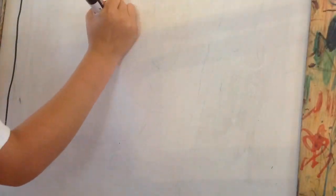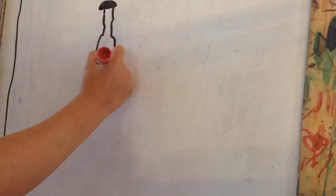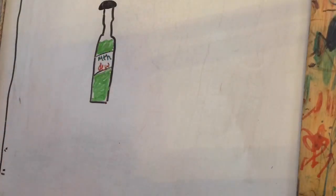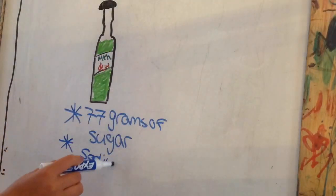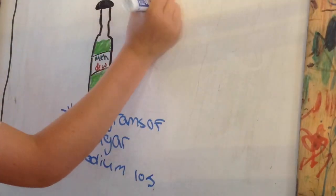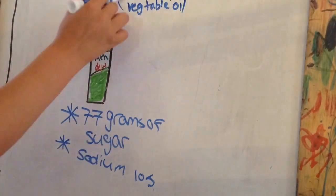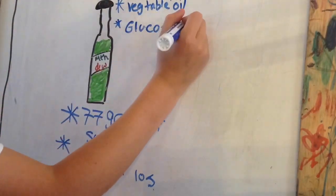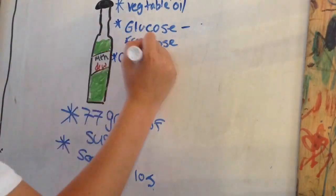Mountain Dew. A lot of people favor this drink, but unhealthy is an understatement. Mountain Dew has 77 grams of sugar, which is by far the most. It has 105 grams of sodium, and it also contains brominated vegetable oil and glucose fructose. On top of that, it has 170 calories.